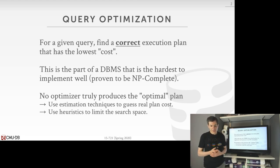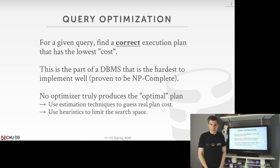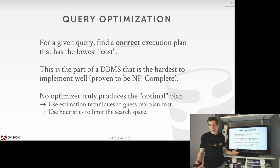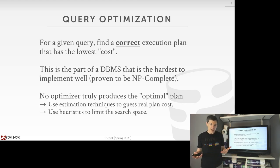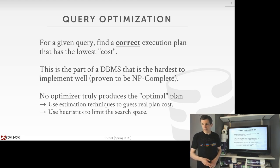We said last class that this is super hard to do, because the problem of trying to find the optimal query plan is proven to be NP-complete. And therefore, even though the name of what we're trying to build is called the optimizer, we're not really ever going to be able to find, in most cases for complex queries, the true optimal plan.